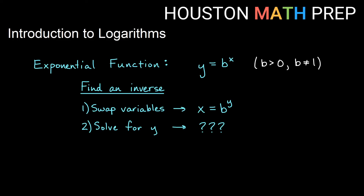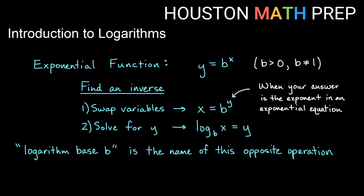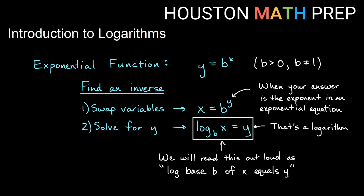We have this new operation we call a logarithm, and it needs to have the same base as our exponential. So logarithm base b is the name of this new operation that's going to be the opposite of the operation exponential base b. The way we'll write this: we'll write "log" and then a subscript b, and then x inside of the log. This logarithm base b is an operation that happens to x, and it's the opposite of an exponential operation like b to the x. When we're trying to solve for something in an exponent — when the answer is an exponent — our answer is going to be a logarithm. We read this as: log base b of x equals y.